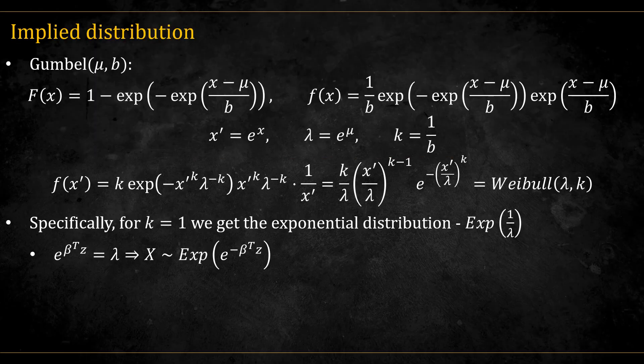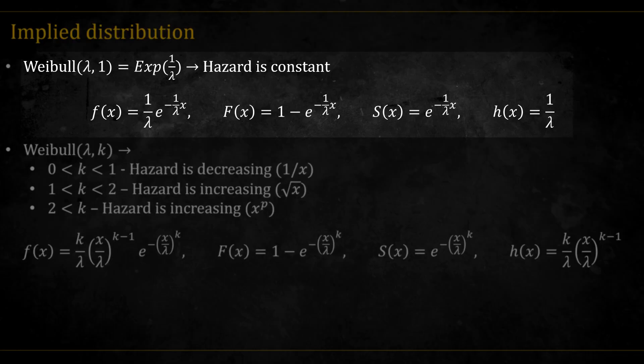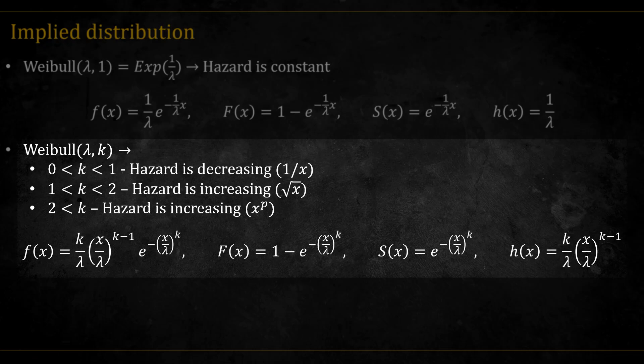Specifically, for k equal 1, we get the exponential distribution. Notice that the parameterization I used for the Weibull distribution is such that the Weibull lambda corresponds to the exponential 1 over lambda. For k equal 1, we get that the hazard is constant. But for different k's, we get different hazards.